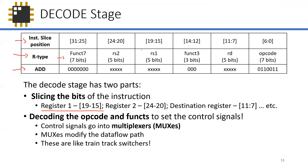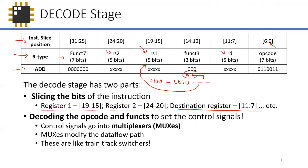Register source one is bits 19 to 15. Register source two is bits 24 to 20. The destination register is bits 11 to 7. You also need to grab func7, func3, and the opcode. In Verilog it's just a matter of reassigning the slices — for example, RS1 equals instruction[19:15]. That wire is connected to the output of the instruction memory. That's the first step: slicing.